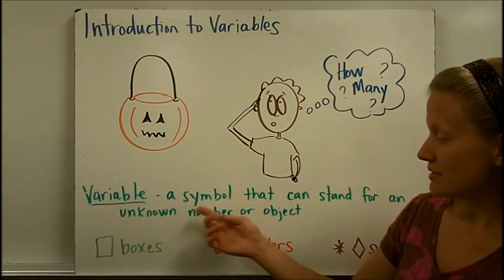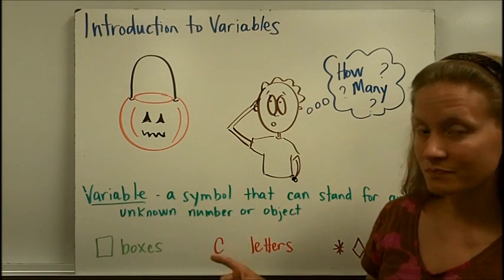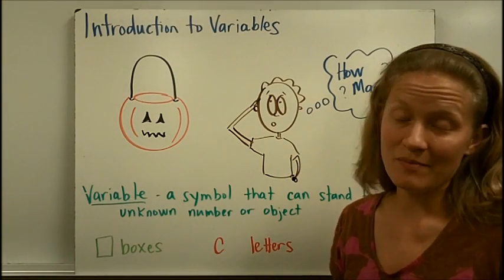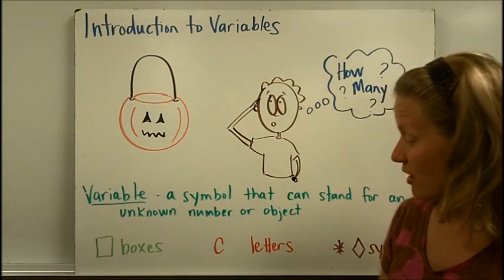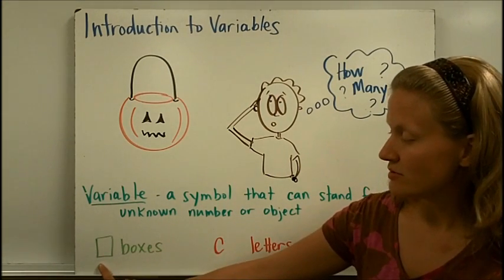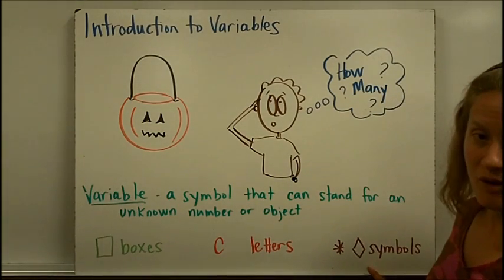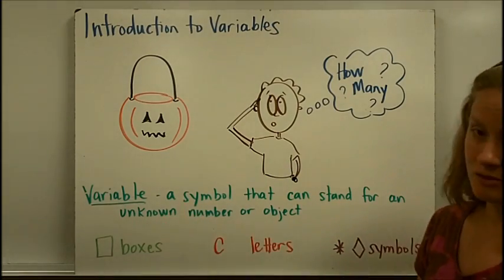So, a variable is a symbol that can stand for an unknown number or object. Variables take many different forms. Most often they are written as letters, but you can also see variables written as a box, kind of like a blank to be filled in, or different symbols can represent unknown amounts.